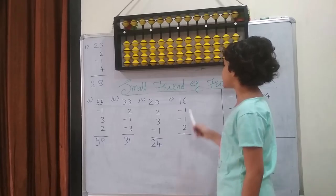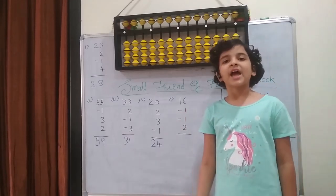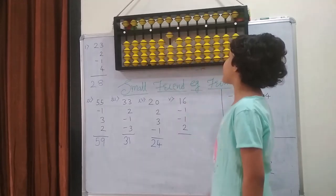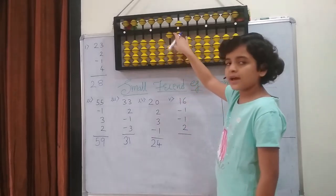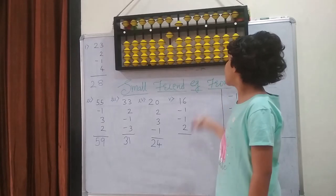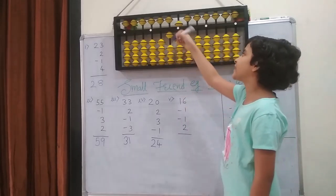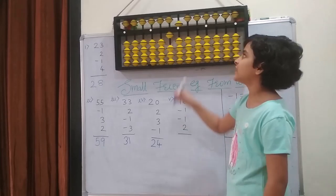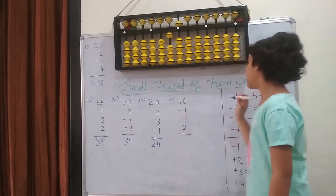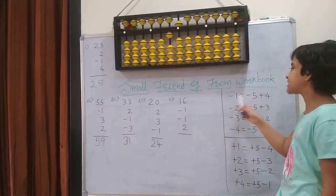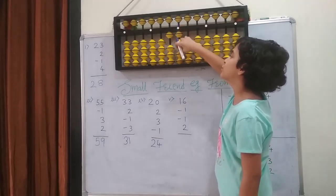Next question: 16 minus 1 minus 1 plus 2. So first on the abacus I am going to put 16. So 1 in the tens place and 6 in the ones place — that is 5 and 1, which is 6. Then I am going to minus 1. I can because I have 1 bead left. Then I am going to again minus 1. I cannot because I have no beads left. So I am going to check if the upper bead is available or not for subtraction. This time it is available, means I can use the small friend formula. This is subtraction. So I am going to use the subtraction formula, which is minus 1 equals to minus 5 plus 4. Minus 5 and plus 4: 1, 2, 3, 4.